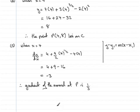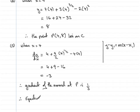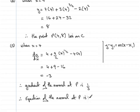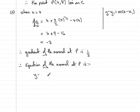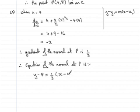We're now in a position to find the equation of the normal. Using the straight line equation, we have m equal to 1/3, and the point (x1, y1) is point P, so x1 is 4 and y1 is 8. Therefore the equation of the normal at P is: y minus 8 equals 1/3 times (x minus 4).